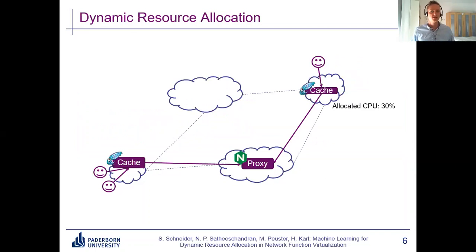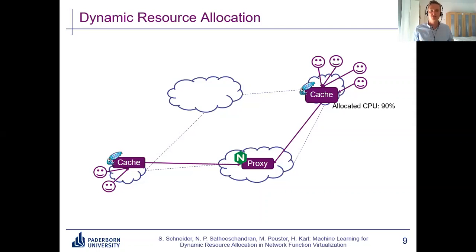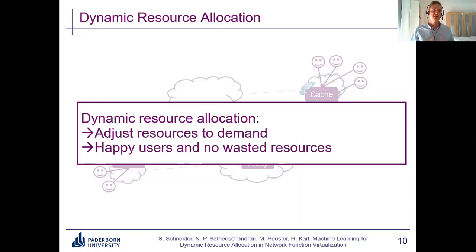A much smarter approach is dynamic resource allocation. Rather than assigning the same fixed amount for all instances, we dynamically and individually adjust the allocated resources per instance according to the current demand it's processing. If we just have one user, maybe 30% CPU is sufficient. If another user arrives, we allocate more resources. Even when more and more users join, we allocate more resources and can still satisfy their demand. With dynamic resource allocation we adjust resources to demand, so we can have happy users and only allocate resources we really need, avoiding waste.